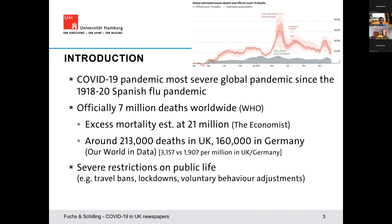The COVID-19 pandemic was the most severe global pandemic since the 1918 to 1920 Spanish flu pandemic, roughly 100 years ago. The official death toll has been estimated by the World Health Organisation at approximately 7 million deaths worldwide. However, a better estimate of the true impact is excess mortality — the total number of deaths directly and indirectly associated with the pandemic — estimated at 21 million worldwide.